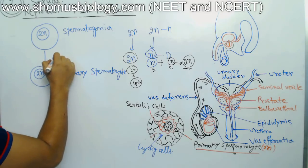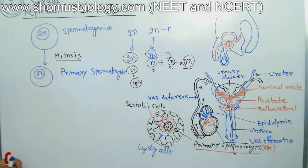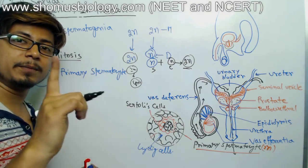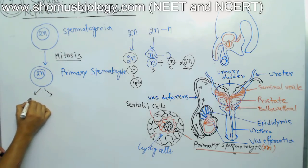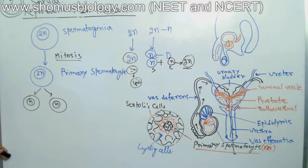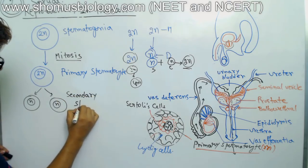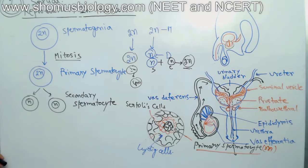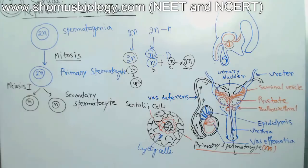The division from spermatogonium to primary spermatocyte is a mitosis division. Once this mitotic division is done, the primary spermatocyte undergoes the first meiotic division — meiosis I. With meiosis I, it produces cells with n (haploid) number of chromosomes, and these cells are known as secondary spermatocytes.